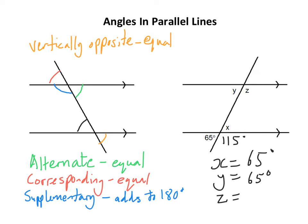And z would be 115. Now there's various ways of doing that—it's either angles on a straight line with y, or it's corresponding with 115 that I've marked, or it's supplementary with the x. I mean, y is alternate with x, so you've got various different ways. You just need to remember that terminology.